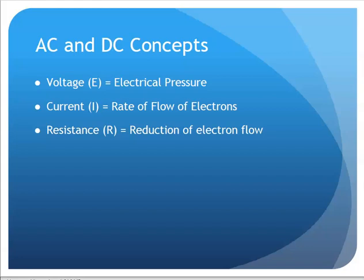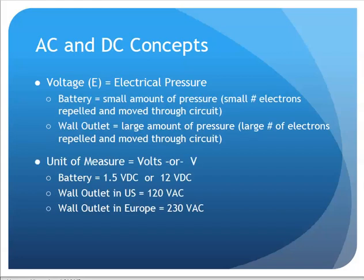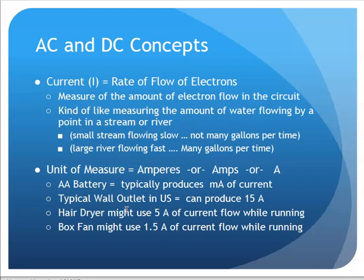There are three values we talk about when discussing electricity: voltage, current, and resistance. Voltage is electrical pressure — a battery has a small number of electrons moving, producing a weak push, while your wall outlet from the power company has a lot of electrons coming out, producing a lot of pressure. A battery might be 1 to 12 volts, while a wall outlet is 120 volts, or 220–230 volts in Europe. Current is the rate of electron flow — think of standing in a creek versus a river like the Susquehanna, which has thousands of gallons moving per unit of time.